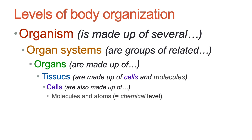Cells themselves are made up of molecules and atoms, and different types of cells are going to have different types of molecules and atoms. For example, cells within the intestine are going to produce different types of molecules than cells found in the brain. They all have the same nucleic acid — the same DNA — but they're going to make different types of molecules. So they'll be different on the chemical level, not completely different; they will share some functional activity, but there will be a lot of differences, and this is what makes them function differently.